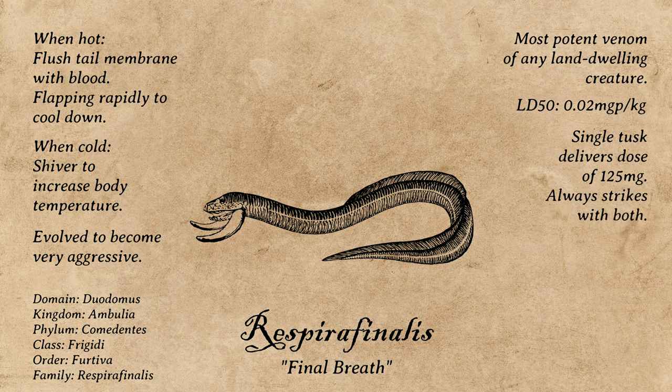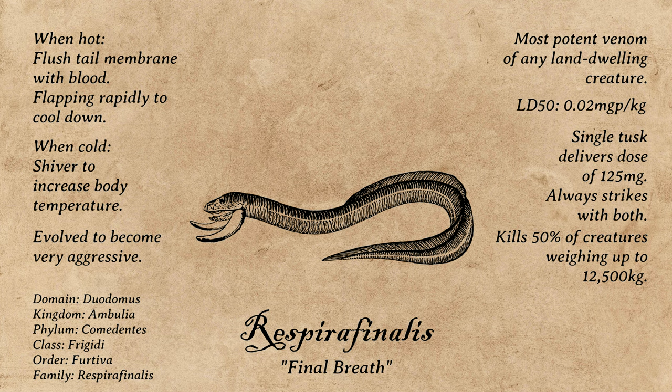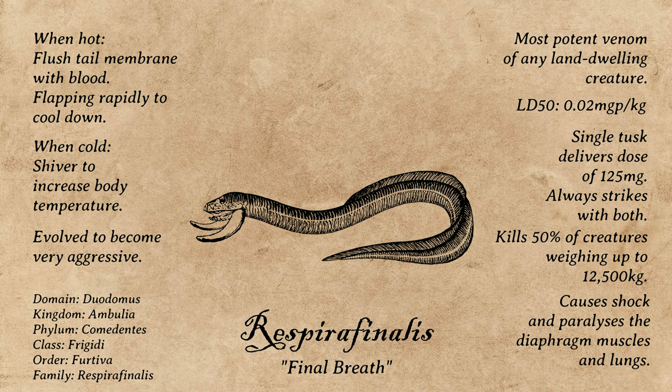This means a single strike will kill 50% of creatures weighing up to 12,500 kilograms. Specifically, the concoction of Respira Phenalus venom causes the body to go into immediate shock, and the venom rapidly paralyzes the diaphragm muscles and lungs — meaning that getting struck by Respira Phenalus literally causes a creature to take its final breath.